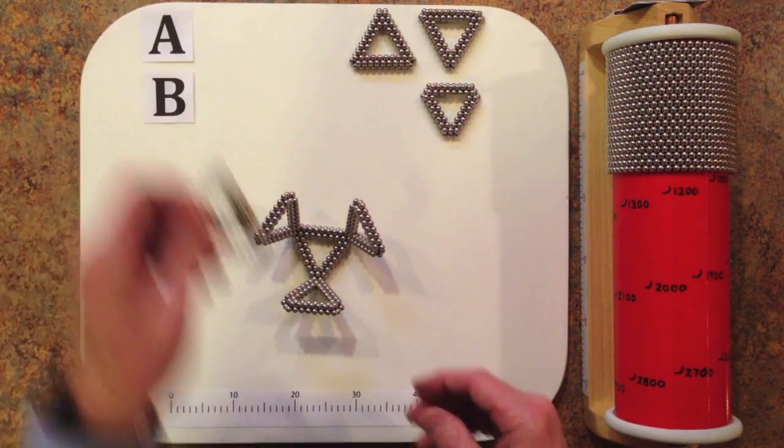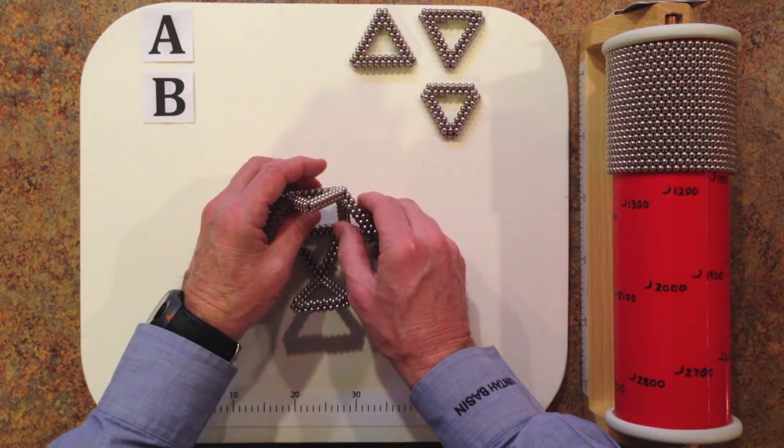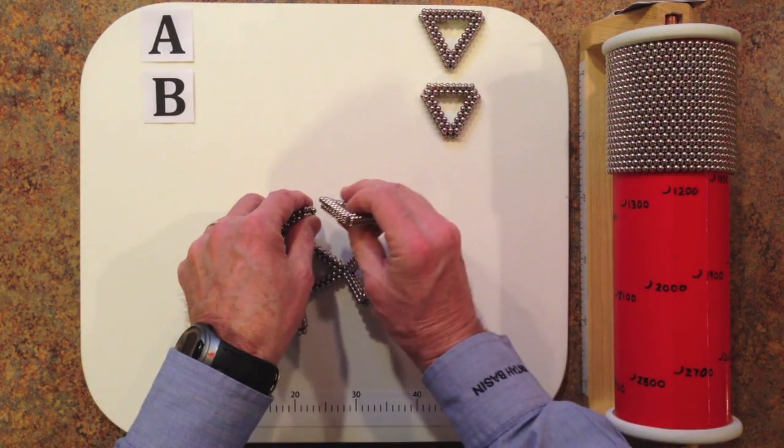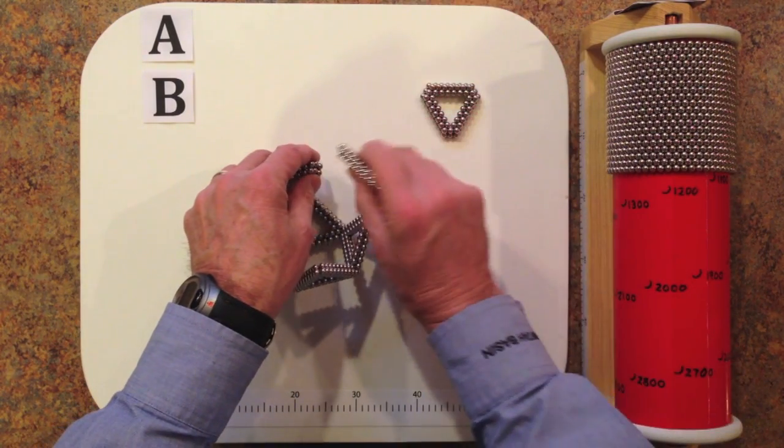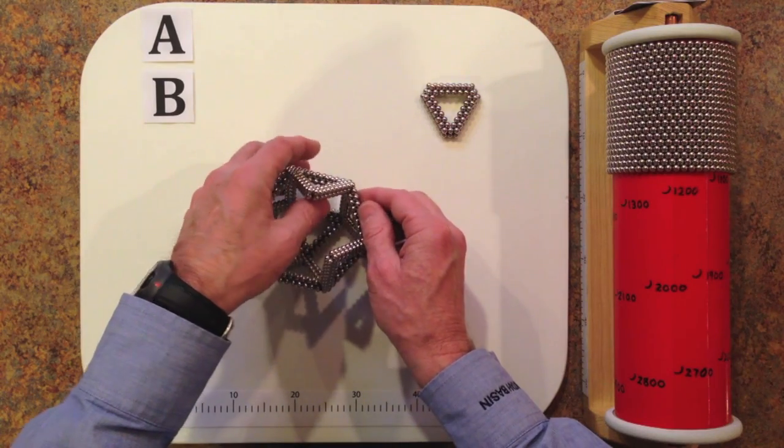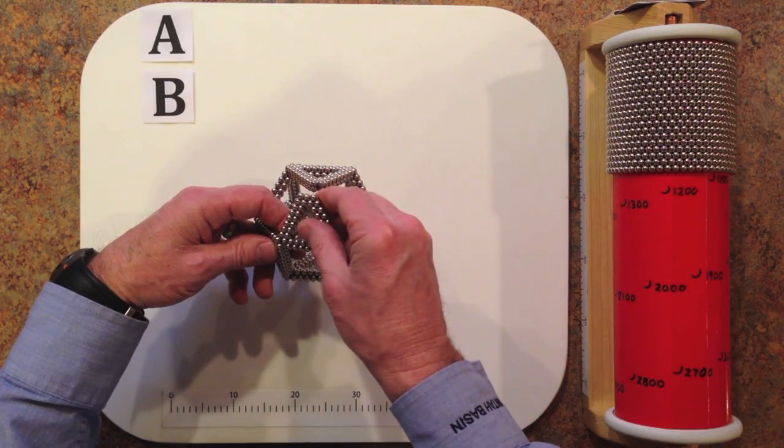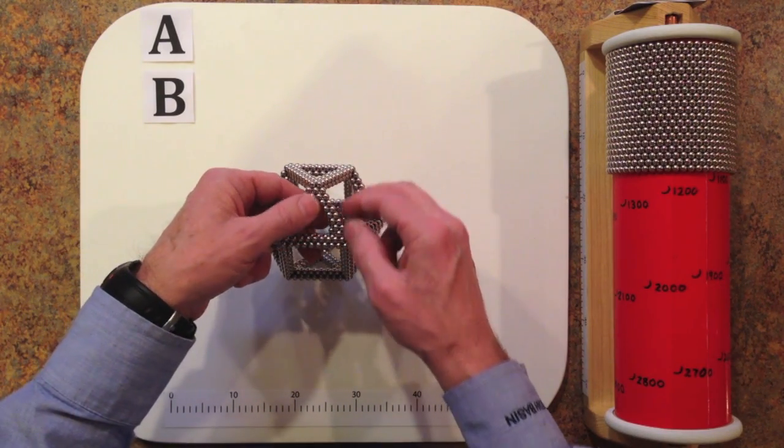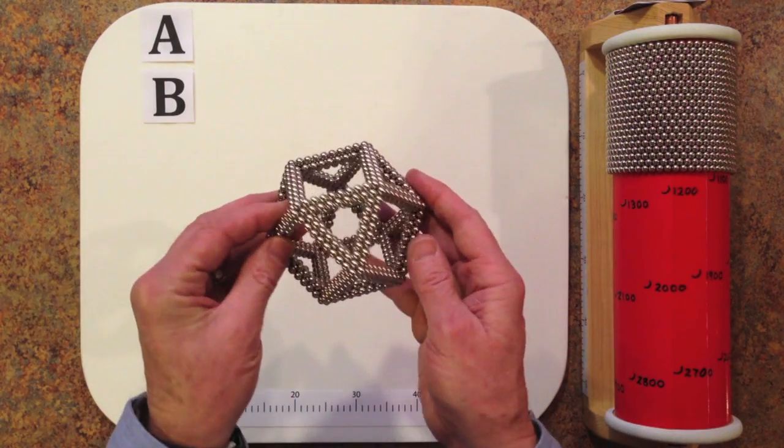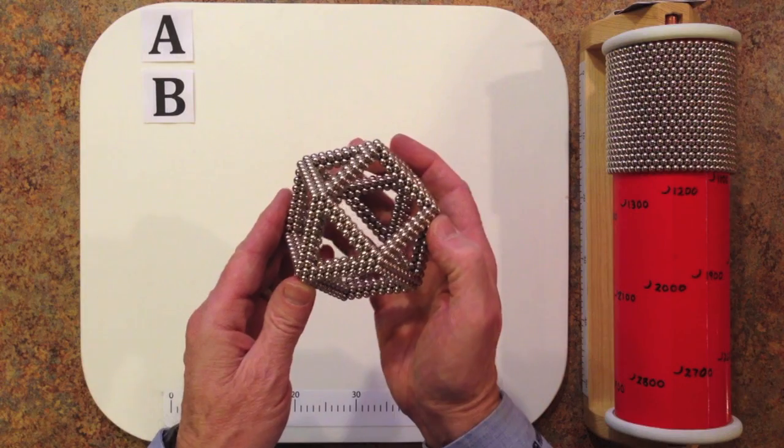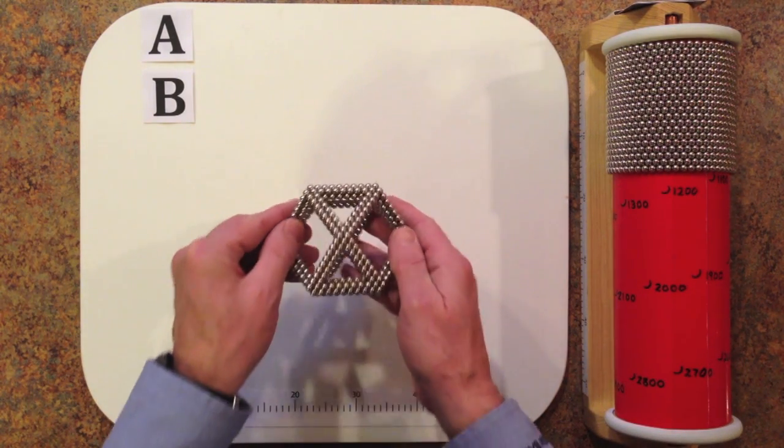Then we'll add three A subunits, and then finally add the B subunit on the very top. So this is the very simple seamless design for a cuboctahedron.